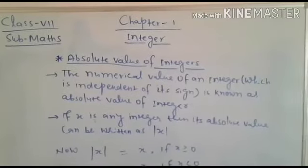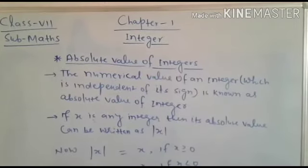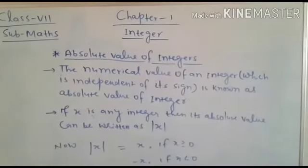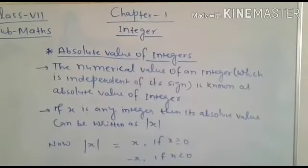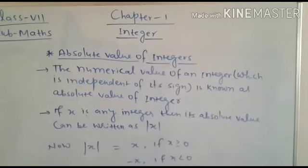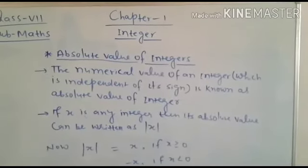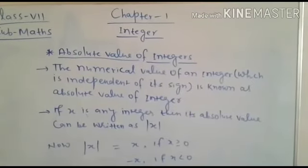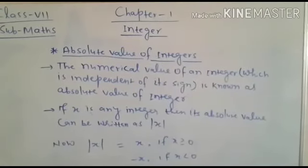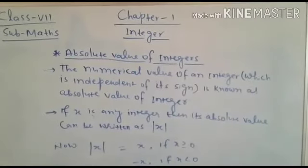Here we have the absolute value of integers. So what do we mean by the absolute value of integers? The numerical value of an integer which is independent of its sign is known as the absolute value of an integer. So absolute value is nothing but a numerical value which is independent of its sign.